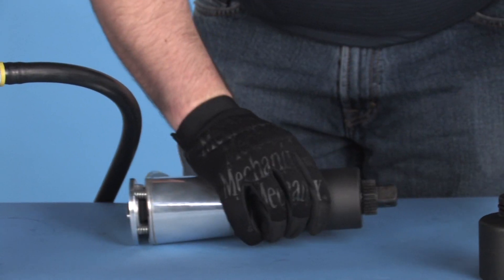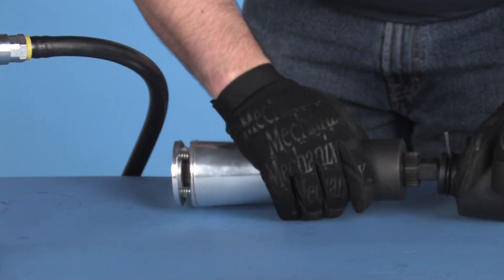Remove the reaction arm and shift the tool into high speed and proceed to run off the nuts.